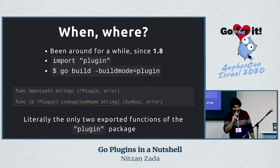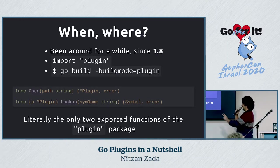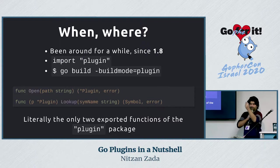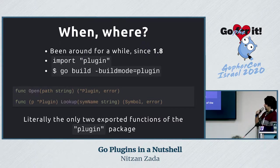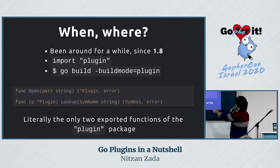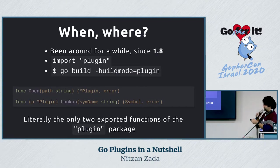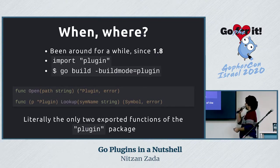The standard library provides us with two neat functions - these are literally the only ones exposed in the plugin module. One loads the shared object file and the other looks up symbols in that file.